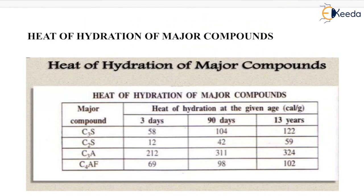The heat of hydration of major compounds is shown in this table. For C3S, the 3-day heat of hydration is 58 calories per gram, for 90 days it is 104, and for 13 years it is 122. For C2S, C3A, and C4AF, the 3-day, 90-day, and 13-year heat of hydration values are also shown in this table. That is all about the heat of hydration. Thank you very much, students.